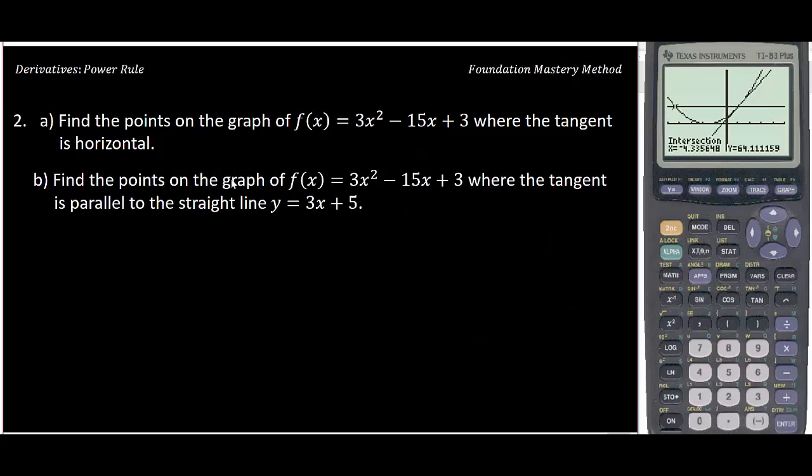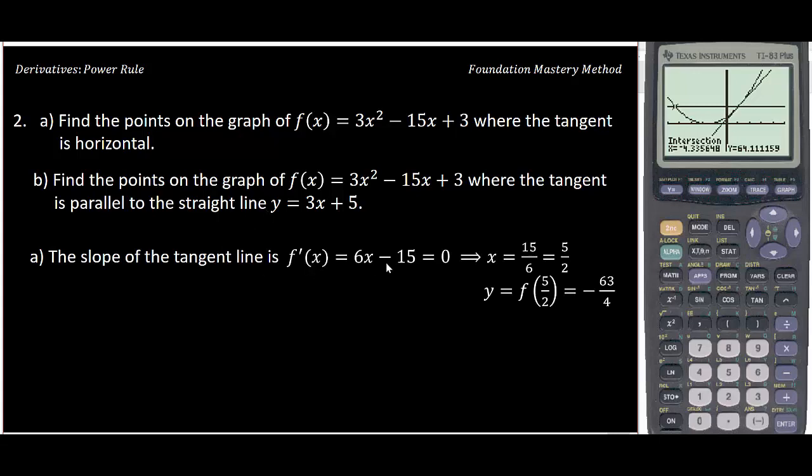We have: find the points on the graph f(x) = 3x² - 15x + 3 where the tangent is horizontal. This is a simple question for part a. First you see the derivative, f'(x) = 6x - 15. This is the slope of the tangent line. When it's horizontal, the slope must be 0. We just need to solve for x. My x is 5/2 or 2.5. When I plug this value into the function, it gives -63/4. So the point on the graph will be (5/2, -63/4) where the tangent line is horizontal.